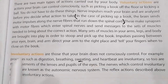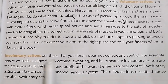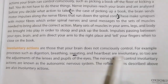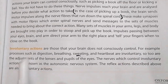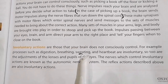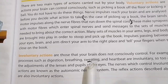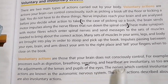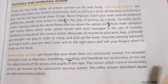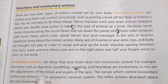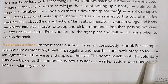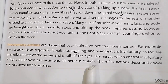Involuntary actions are actions which are not consciously controlled by the brain. Examples include digestion, breathing, sweating (the release of liquid, also called perspiration), and the heartbeat. Two other examples are the adjustment of the lenses and pupils of the eye. The nerves which control involuntary actions are known as the automatic nervous system.